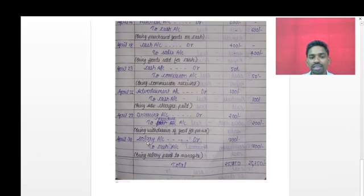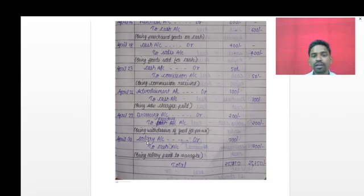On 30th April: paid salaries of manager. 'Paid' means cash is paid. Salary is an expense for the business - salary account is debited. Cash goes out after paying, so cash account is credited. Entry: salary account debit; to cash account credit.